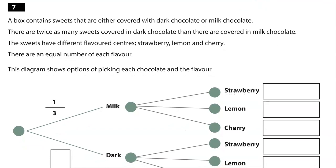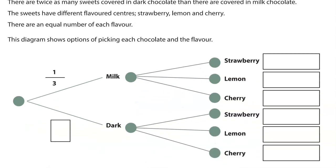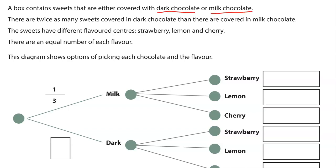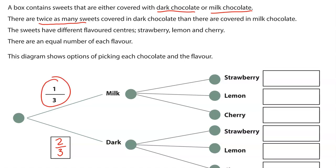A box contains sweets that are either covered with dark chocolate or milk chocolate. There are twice as many sweets covered in dark chocolate than there are covered in milk chocolate. The sweets have different flavoured centres, strawberry, lemon and cherry. There are an equal number of each flavour. This diagram shows options of picking each chocolate and the flavour. Right. So we've got milk and dark. So that is what they're covered with. So 1 third milk, so 2 thirds will be dark because it's twice as many and also if you take away 1 third from 1, it's going to give you 2 thirds.